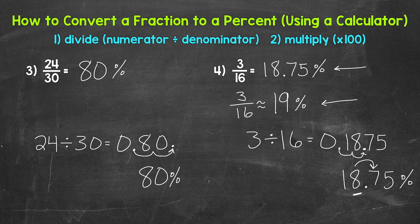This is something to keep in mind, especially if we end up with a very long decimal or a repeating decimal — we can always round if need be. So there you have it — that's how to convert a fraction to a percent. Divide the numerator by the denominator to get a decimal, and then multiply that decimal by 100 to convert it to a percent.